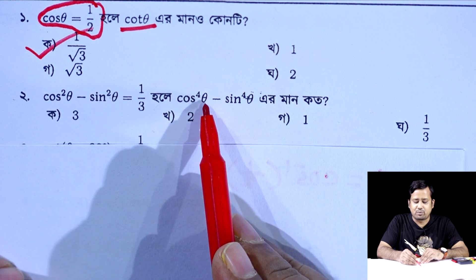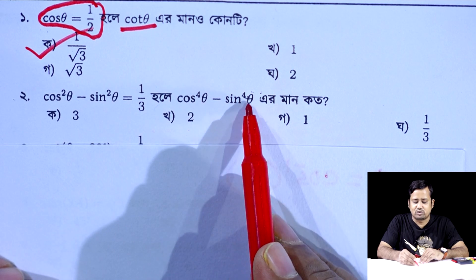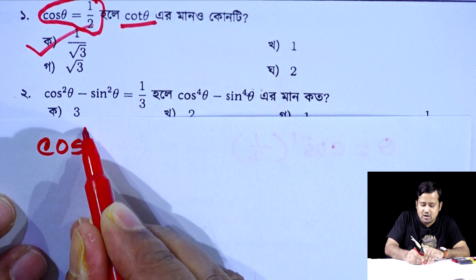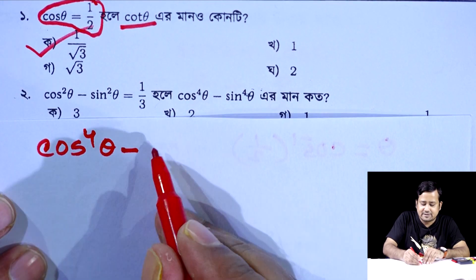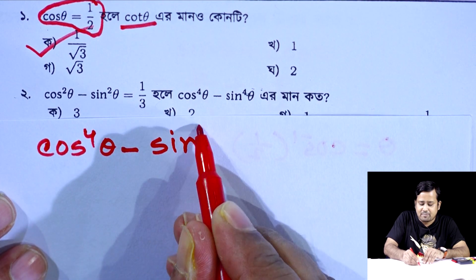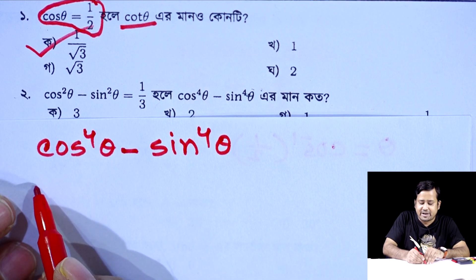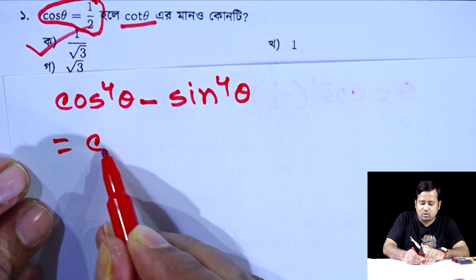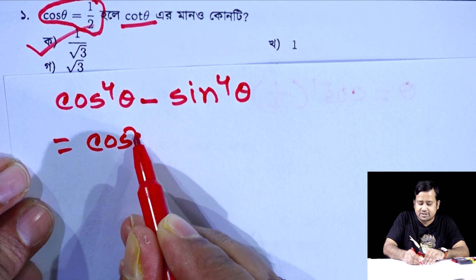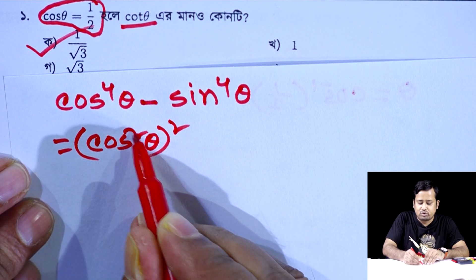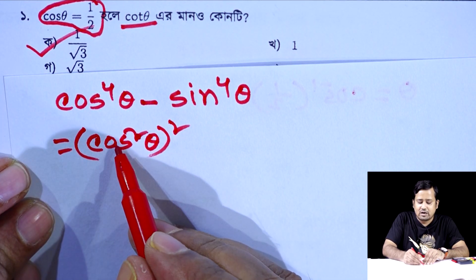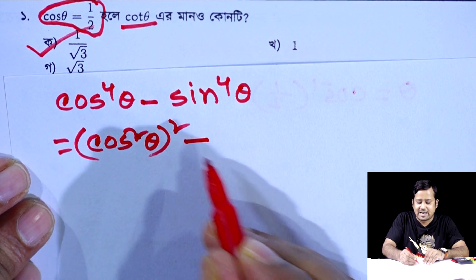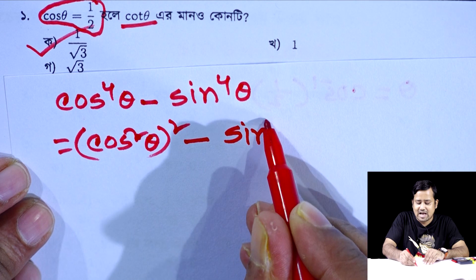Now consider: cos to the power 4 theta minus sin to the power 4 theta. We can take this as a positive number. The inverse half is equal to 1 by 2. So cos to the power 4 theta minus sin to the power 4 theta — we can write cos to the power 4 theta as cos squared theta squared.